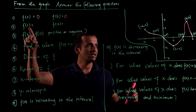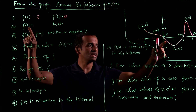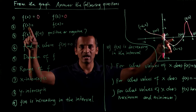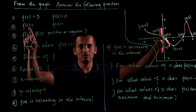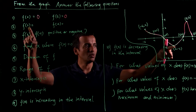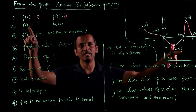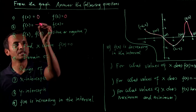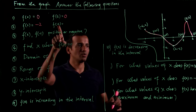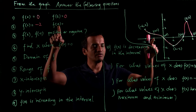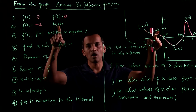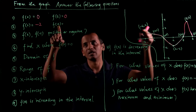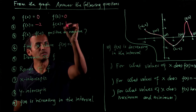How about f(2)? When x is positive 2, what is the value of y? The value of the function, or value of y when x is 2, is negative 2. And also, when x is negative 2, the value of y is positive 1, or f(x) is positive 1.